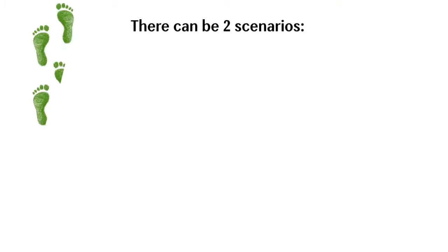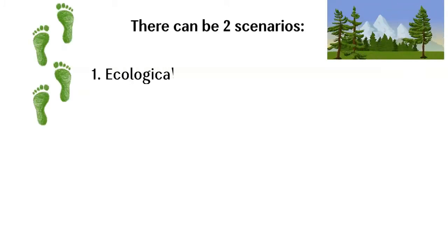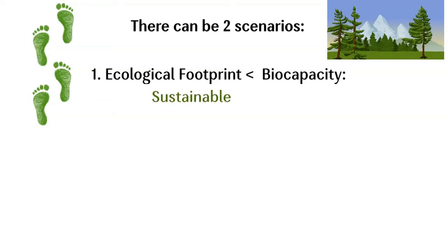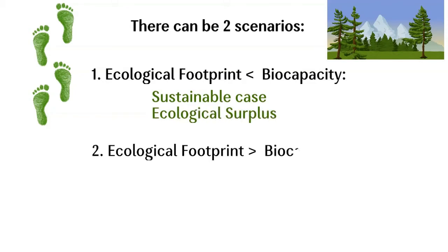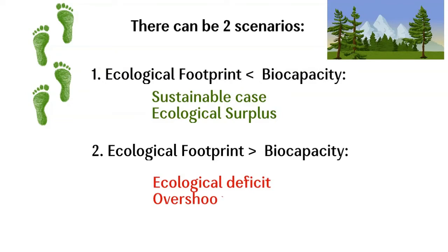There can be two scenarios. First, Ecological Footprint is less than Bio-Capacity — this is the ideal case, a sustainable scenario of Ecological Surplus. Second, Ecological Footprint is greater than Bio-Capacity — this is the case of Ecological Deficit, where our needs far exceed what the Earth can support. We call this the Overshoot Scenario.